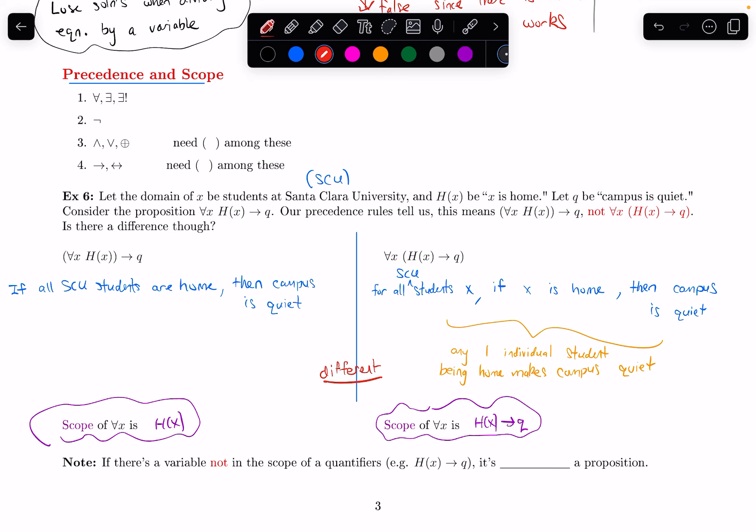I want to end by mentioning that if we have a variable that's not in the scope of any quantifier, like for example, if I have H(x) implies Q, I have this propositional function, and there's no quantifier in front of that propositional function, then it's not a proposition.